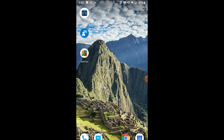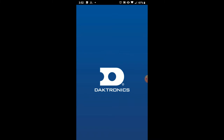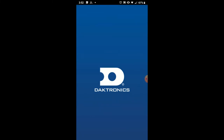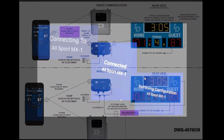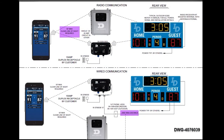First, open the app by tapping the icon on your device. When the app launches, it will automatically search for an MX1 device. Note that the DAC Score app does use Bluetooth Low Energy, or BLE, to communicate with the Allsport MX1. This diagram shows signal flow for both the wired and radio communication methods.